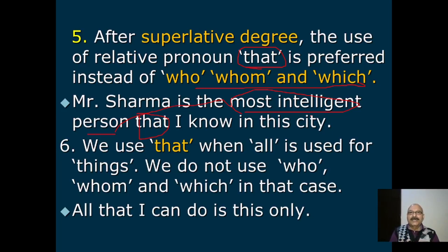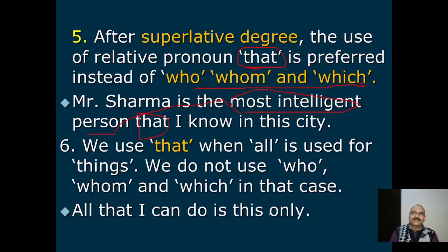We use 'that' when 'all' is used for things — we do not use who, whom, or which in that case. Example: 'All that I can do is this only.' Here 'that' stands for all things — جو کچھ بھی میں کر سکتا ہوں بس یہ ہے۔ This applies to actions or non-living things.